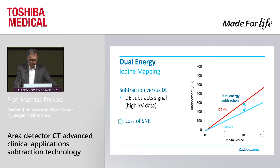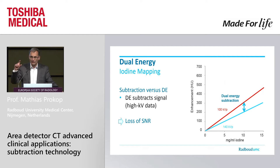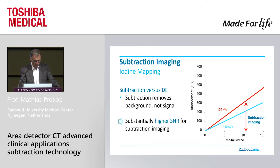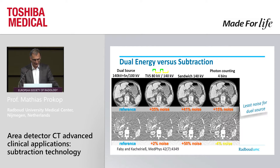Iodine mapping is another application of dual energy — we know it, for example, for pulmonary dual energy imaging. But the problem with dual energy imaging is that we only use the small difference between the high kV and the low kV, meaning we throw away the signal of the high kV image. That gives us a loss of signal-to-noise ratio, which we don't have with subtraction imaging, where we get the full signal of 100 kV because what we're actually subtracting is the baseline signal.